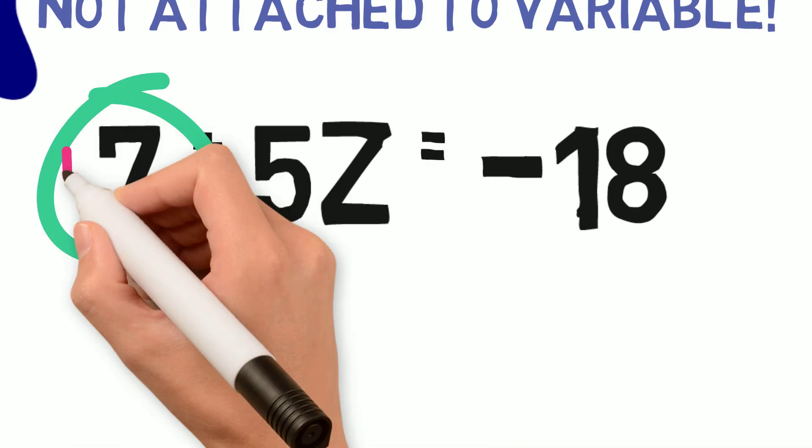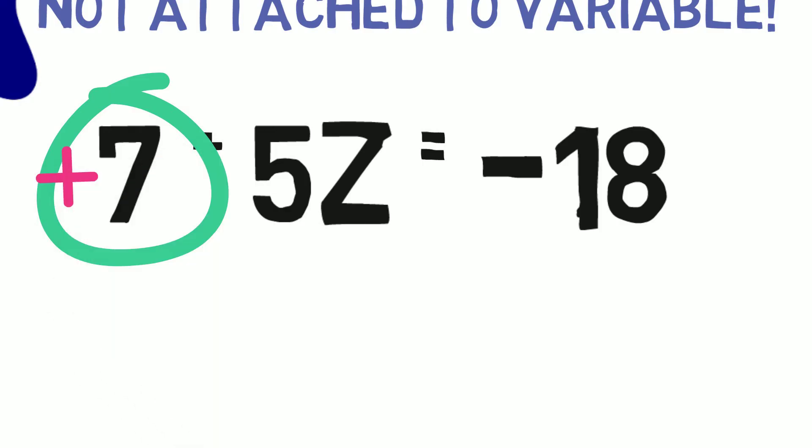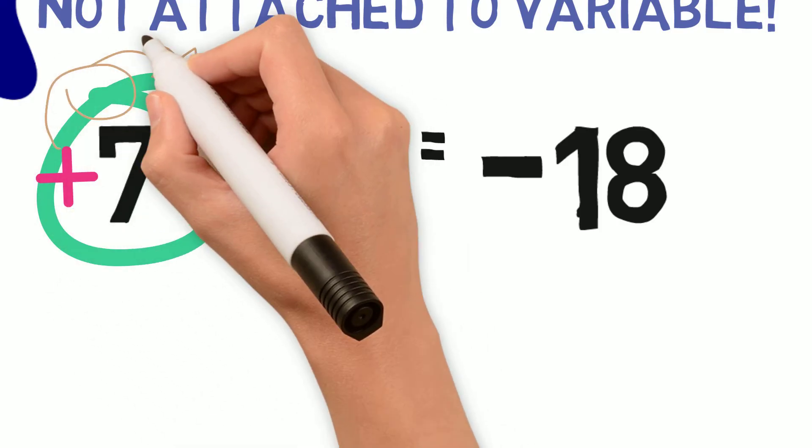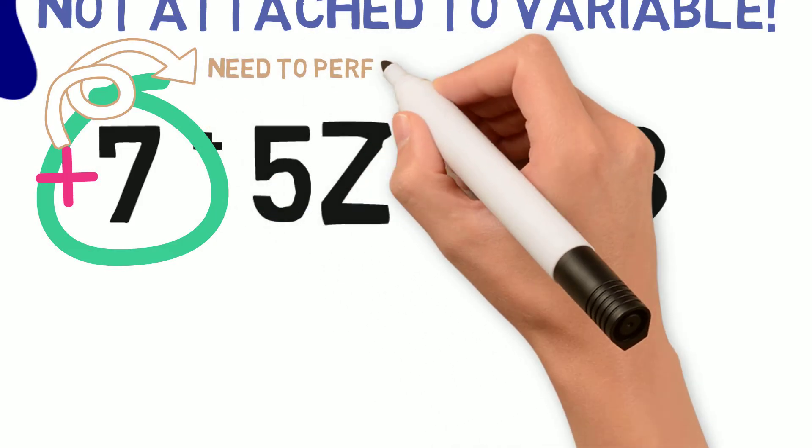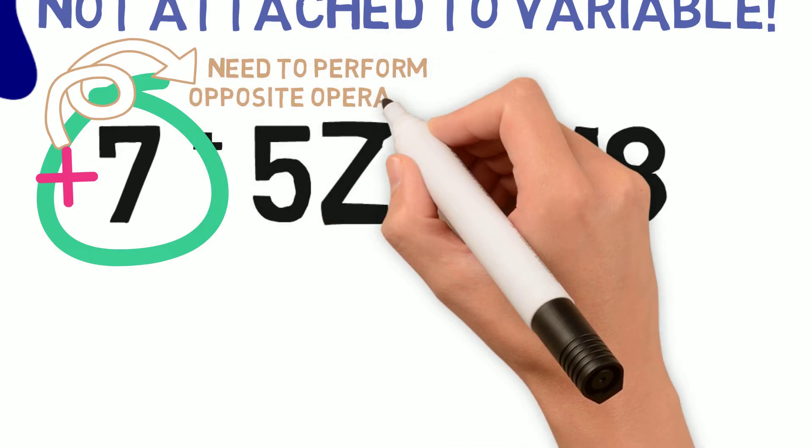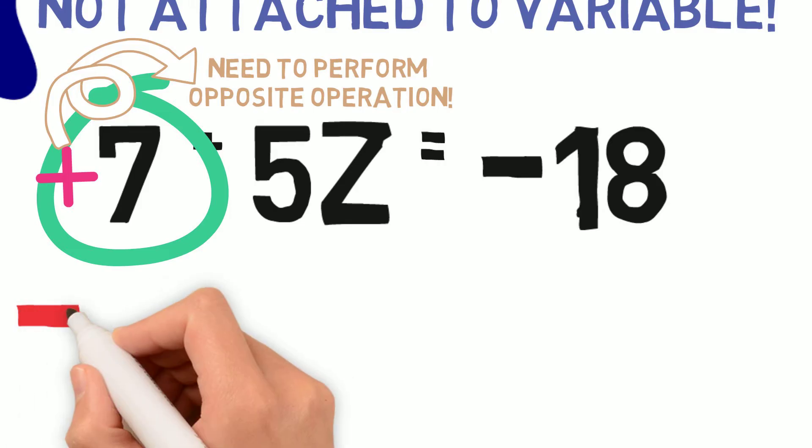Since 7 doesn't have any sign in front of it, we know it's positive. To get rid of the 7, we need to perform the inverse or opposite operation. We know 7 is positive, so to cancel out a positive 7, we subtract 7.